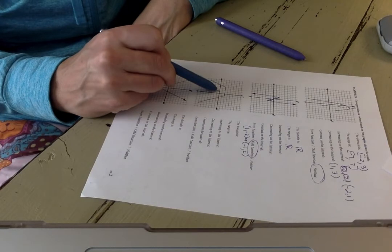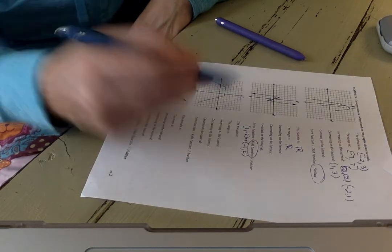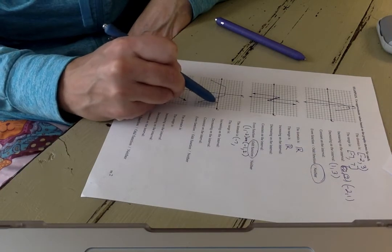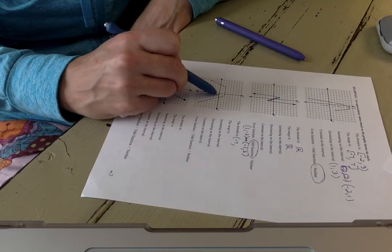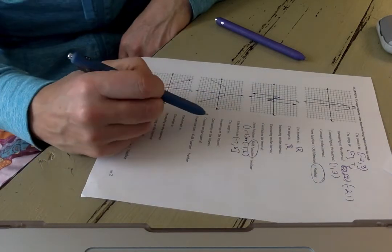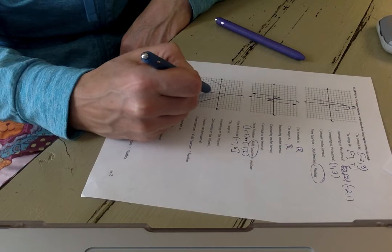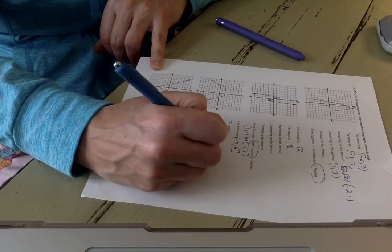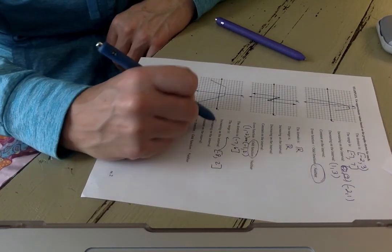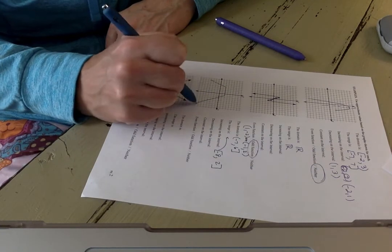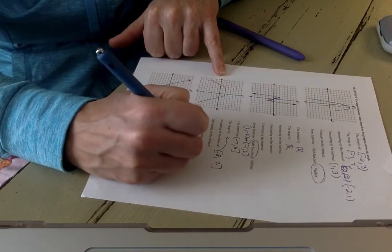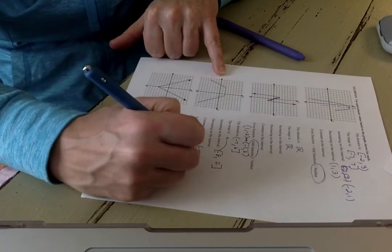The domain of the function is going from negative 7 non-inclusive all the way to 6 inclusive. The range is going from negative 8 to 2. Increasing on the interval from here to here, decreasing from there to there, and it's constant on the interval from negative 5 to 1.